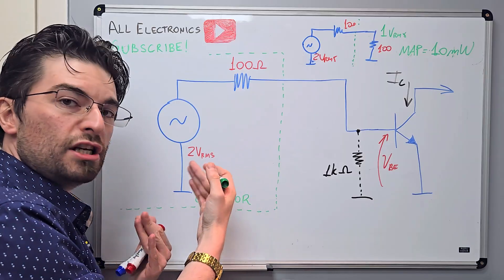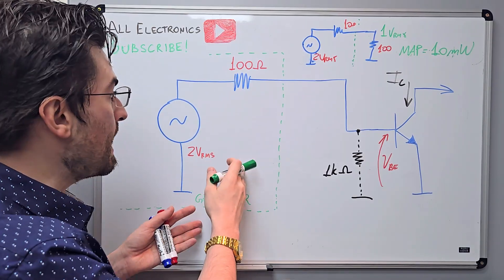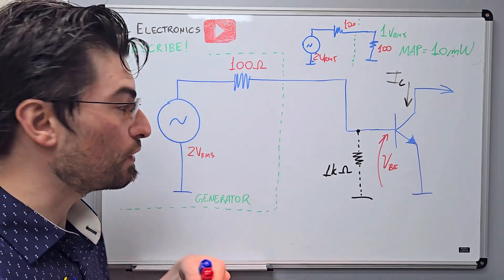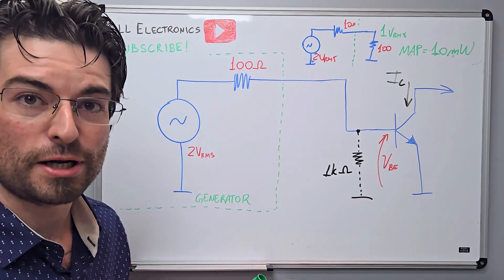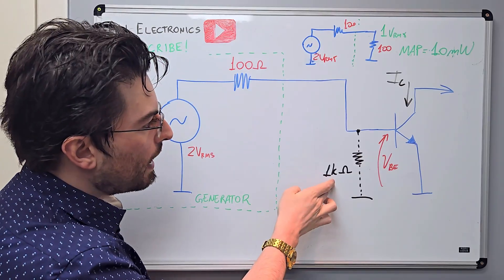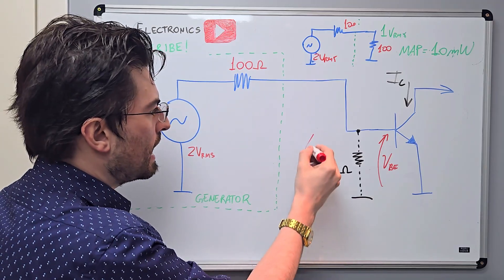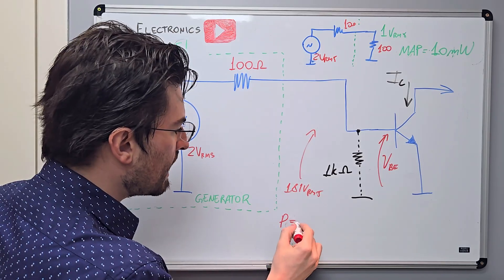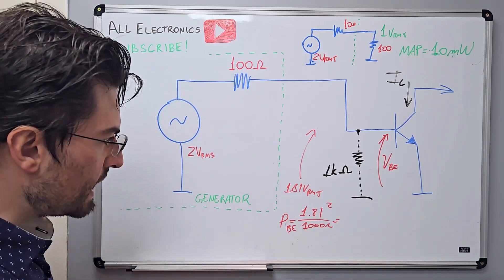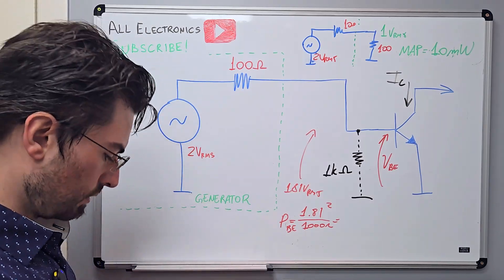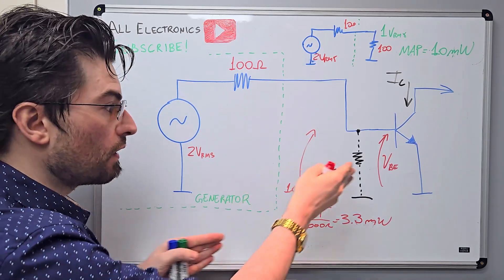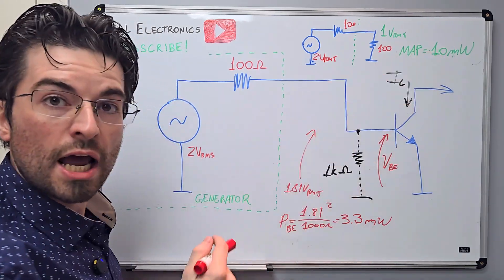This could be the output of a mixer, a filter, or an antenna — it doesn't matter. The power actually being delivered to the transistor in the current configuration: we had 1.81 volts RMS, so the power at the base-emitter is 1.81 squared over 1000 ohms. That comes out to 3.3 milliwatts. This is fascinating — we are not extracting the maximum power from the generator. The circuit in front of the transistor can deliver 10 milliwatts, and we are only extracting one third of that.